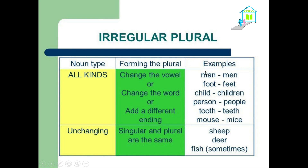Some nouns are unchanging — which means we use the same form for both singular and plural. For example: one sheep, two sheep, three sheep, a group of sheep — we don't add S. The same thing for deer: one deer, two deer, group of deer, etc. And we have also the same thing for fish.